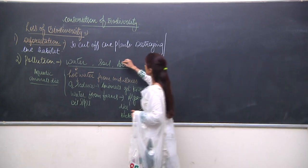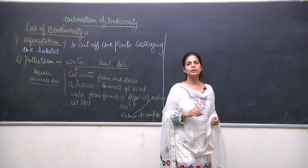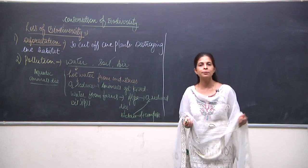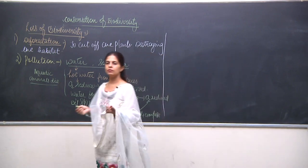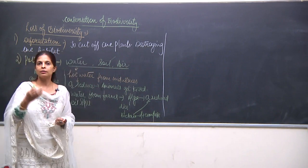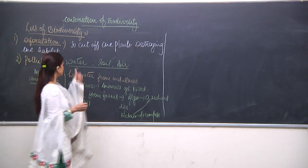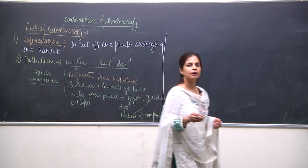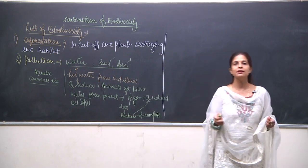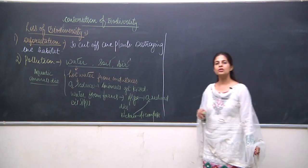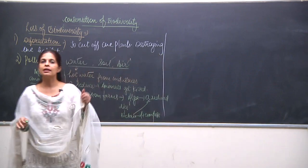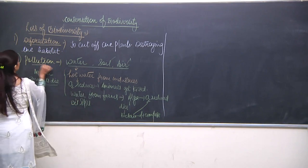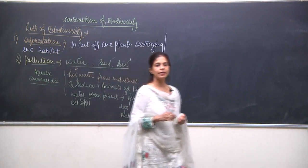Regarding soil pollution — when farmers use pesticides, insecticides, and fertilizers, and when polythene and plastic are burned, gases are emitted and mix in the air, causing air pollution. When polythene and chemicals are dumped in the soil, the fertility reduces and organisms living in the soil suffer great loss. Any kind of pollution is responsible for killing different kinds of animals.